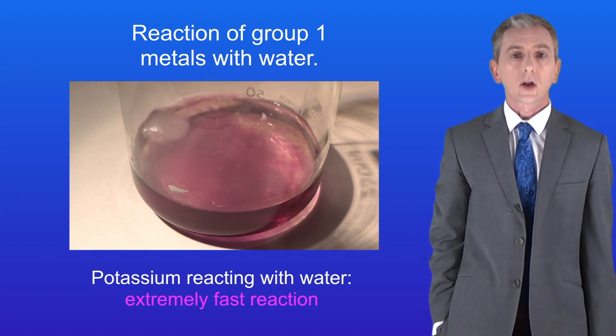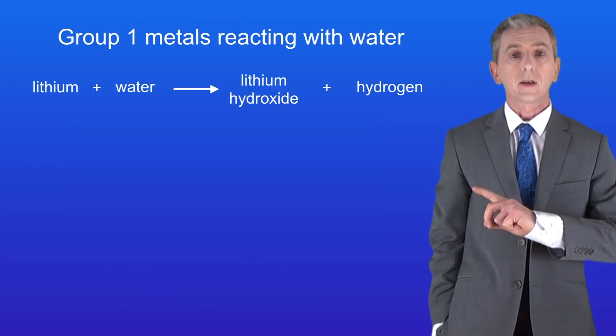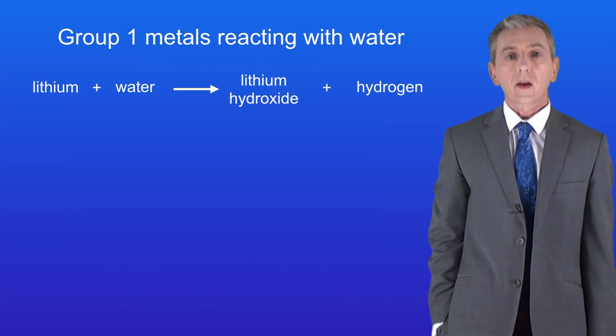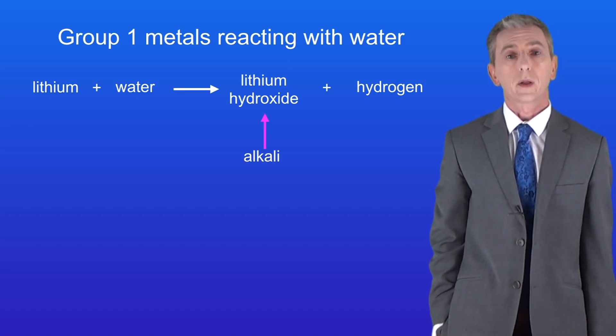So let's take a look at the equation for the reaction between lithium and water. Here it is. We can see that in this reaction we're producing lithium hydroxide and hydrogen. Lithium hydroxide is an alkali, which is why the universal indicator turned purple. Hydrogen is a gas, which is why we saw effervescence.